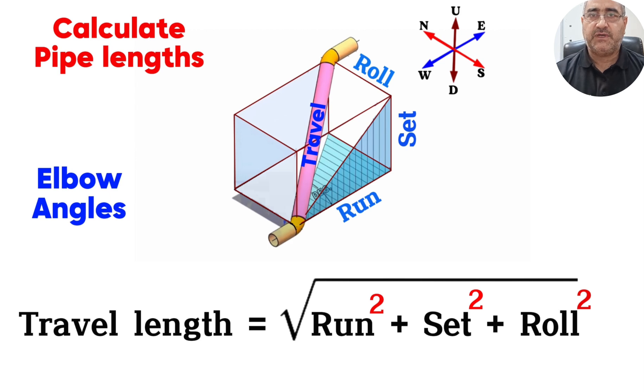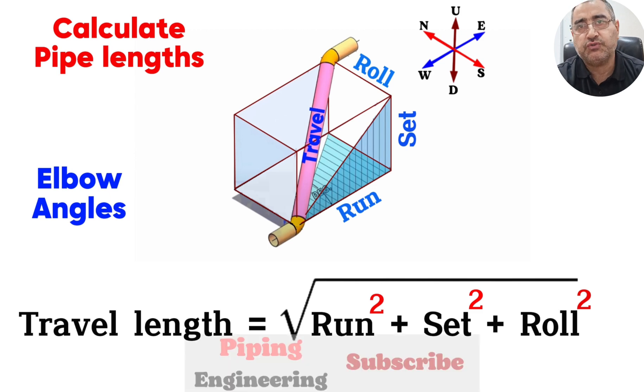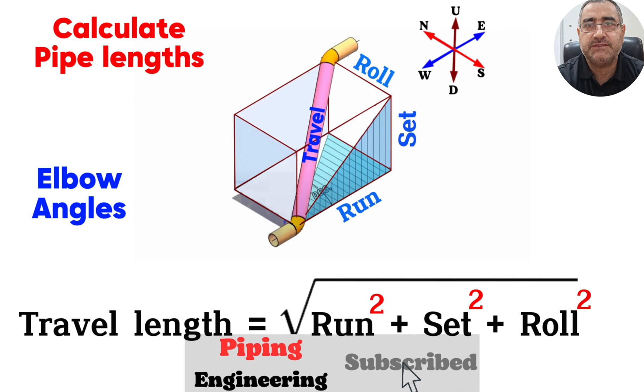In this type of double-rolling pipeline, isometric drawings typically provide the lengths of the run, set, and roll. These measurements help in calculating the overall travel length and determining the exact positioning of the pipeline within the three-dimensional space. Let's examine this method we learned on a fabrication isometric drawing.